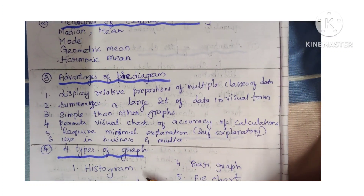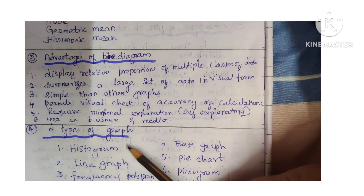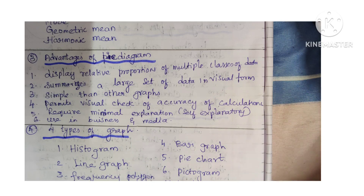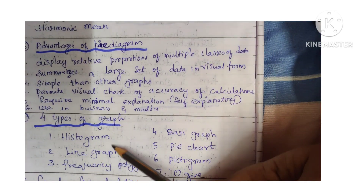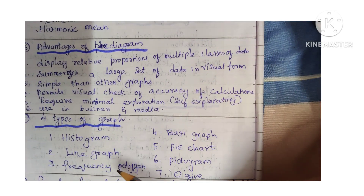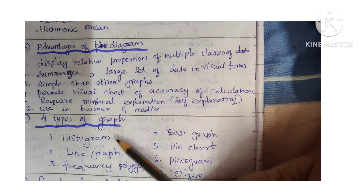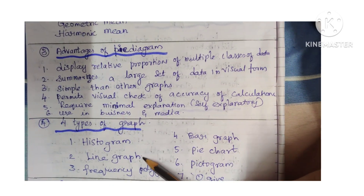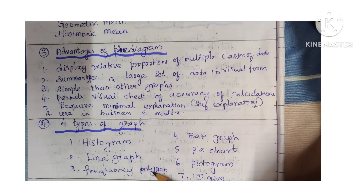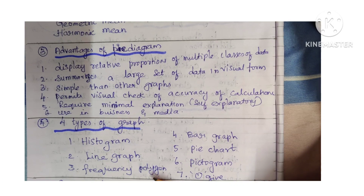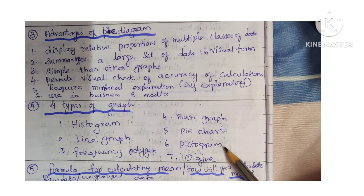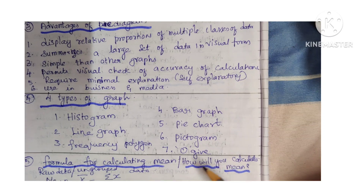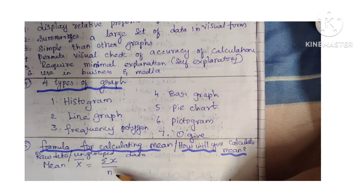What are the 4 types of graph? They have asked only 4 types, but I have given 7 types so that if you forget one you can write another. The types are: histogram, line graph, frequency polygon, bar graph, pie chart, pictogram, and ogive.